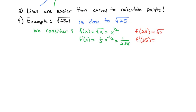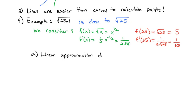f of 25 is the square root of 25, which is 5. And f prime of 25 is 1 over 2 times the square root of 25, or 1 over 2 times 5, which is 1/10. So the linear approximation of the square root of x at 25 is the equation of our tangent line: the y-coordinate of 5, plus the slope of 1/10, times x minus the x-coordinate of 25.